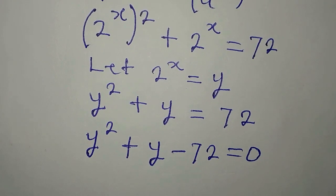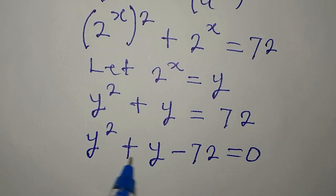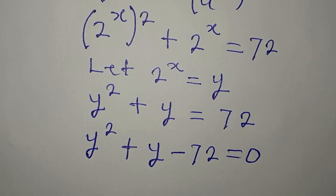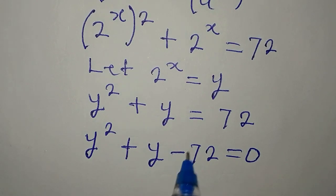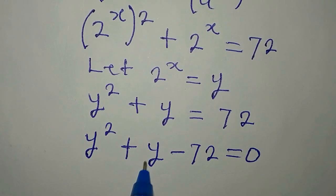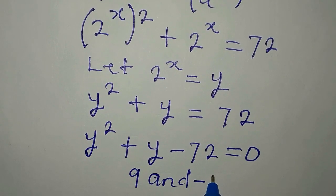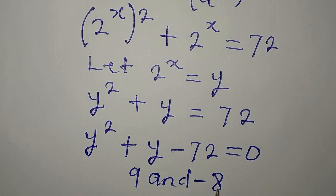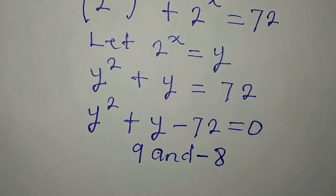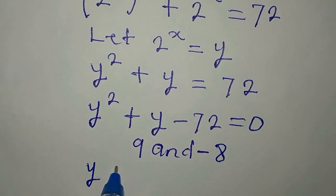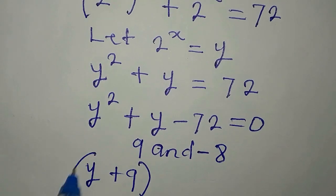We can solve this by factorization. Sometimes it is faster to factorize, especially if it is factorizable like this. It is factorizable because for this 72, there are two numbers we multiply to get minus 72, and the same two numbers we add to get the coefficient of y, which is 1. The two numbers will be 9 and minus 8, because 9 times minus 8 is minus 72, and 9 plus minus 8 gives us plus 1.